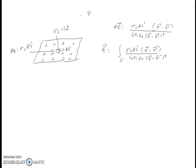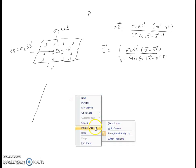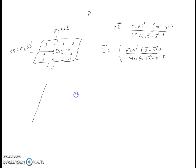The electric field at point P due to the entire surface charge distribution is obtained by integrating the above expression over the entire surface charge distribution. We will now determine the electric field at point P due to a line charge distribution. In this case, the charge is distributed along a thin wire, and we consider a differential length dL dash.